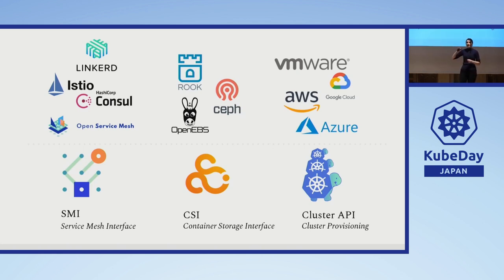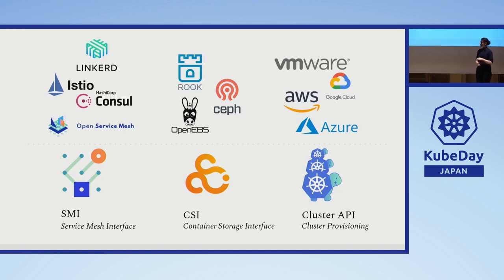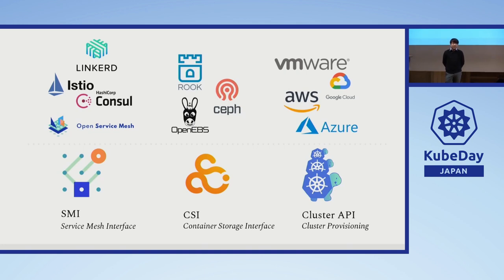It is worth mentioning that Linkerd is a graduated CNCF project and Istio is recently an incubation CNCF project. CSI was introduced in Kubernetes 1.9 and it provides flexibility to Kubernetes and its maintainers, just like CRI and CNI, but specifically for storage drivers. It doesn't just support open-source implementations such as Rook and Ceph or OpenEBS, but also major public cloud services support this type of platform.